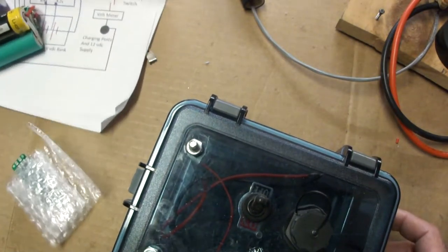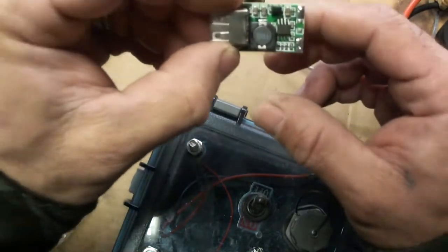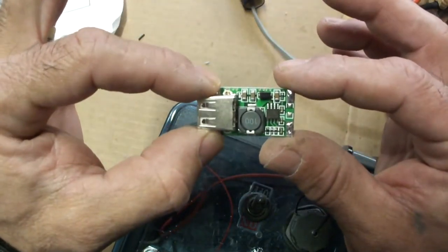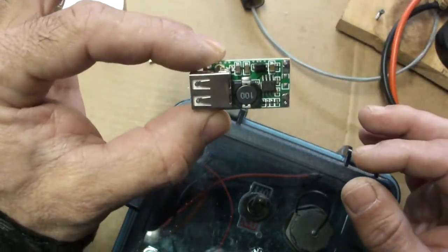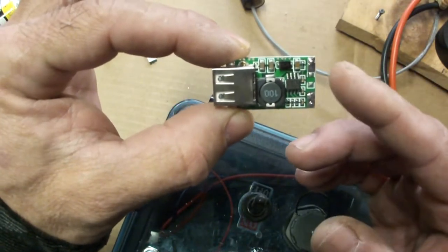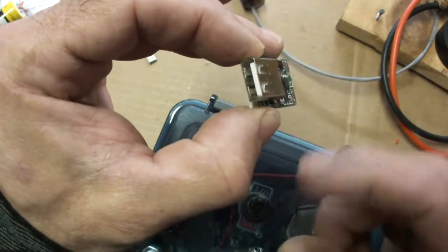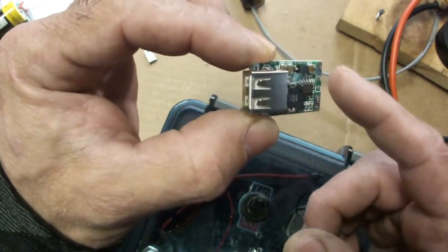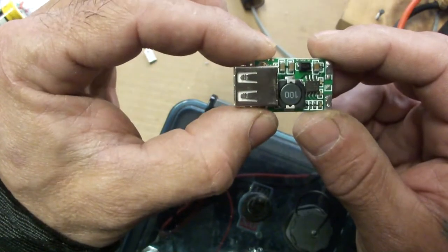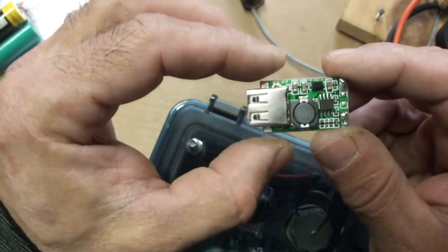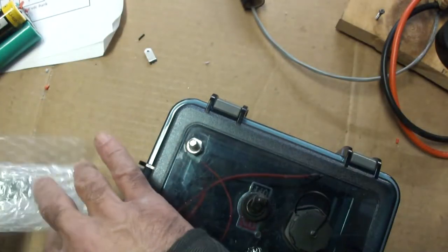The other thing I'm going to be using is this little buck voltage converter. So this converter can feed just about anything. If I remember the specs correctly, it's 2 to 30 volts input and it'll give you a 5-volt USB output at up to 3 amps, so it can be a fast charger as well.